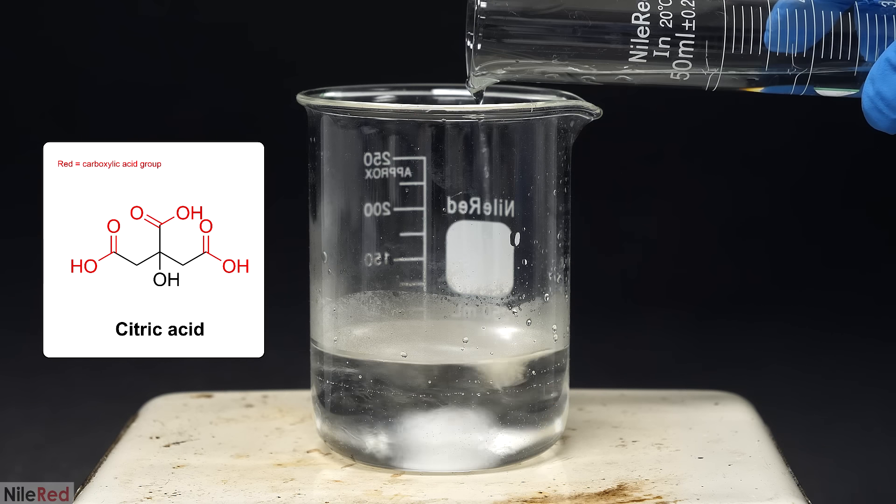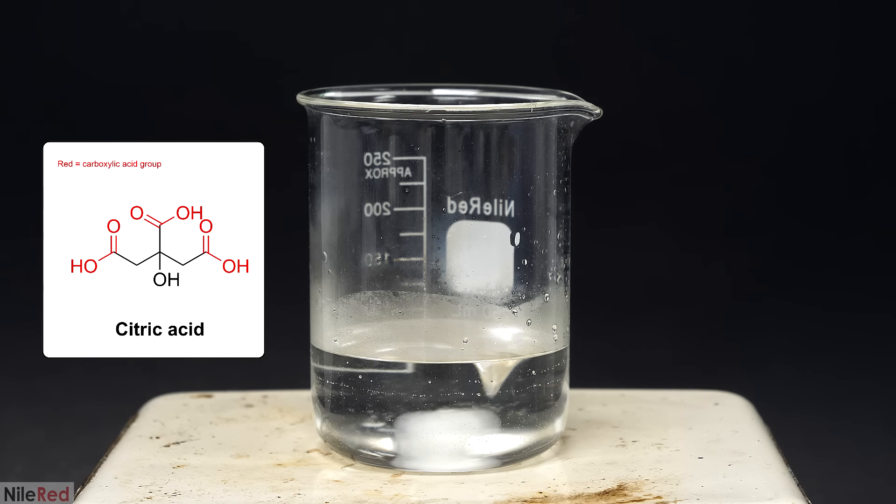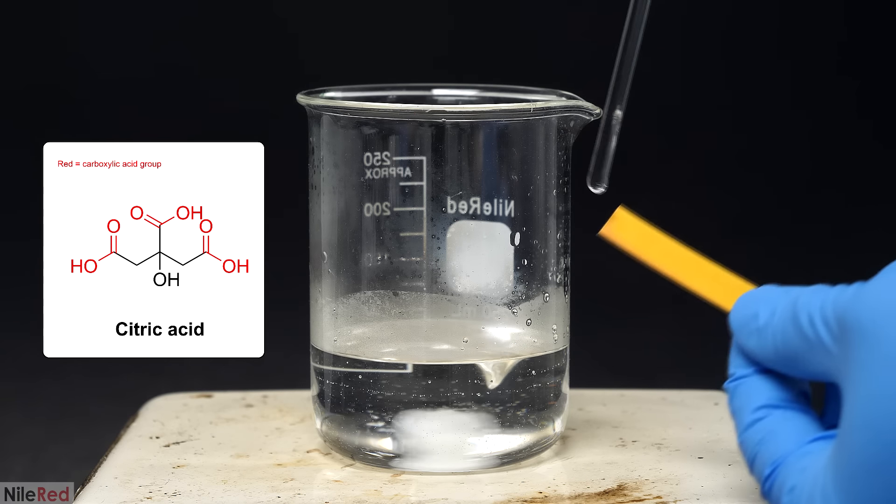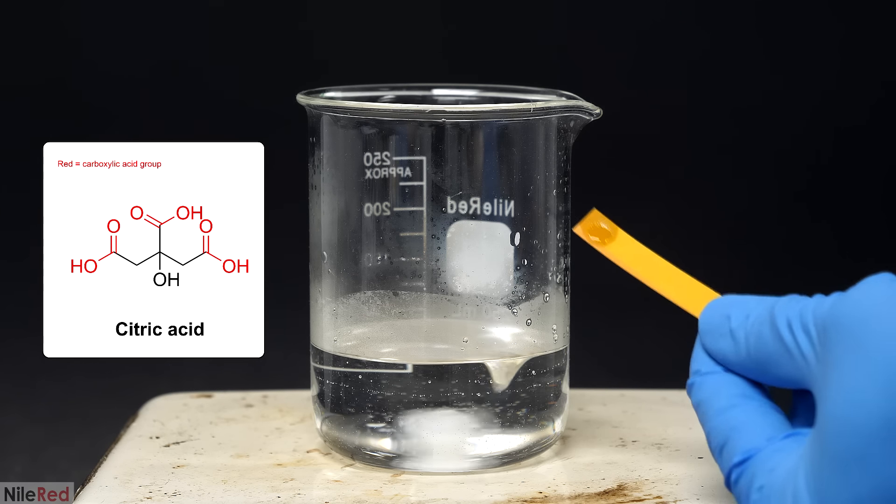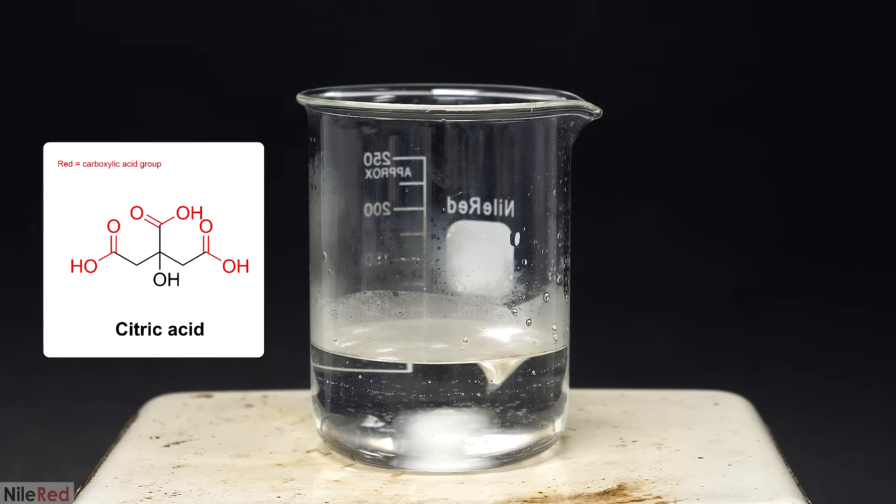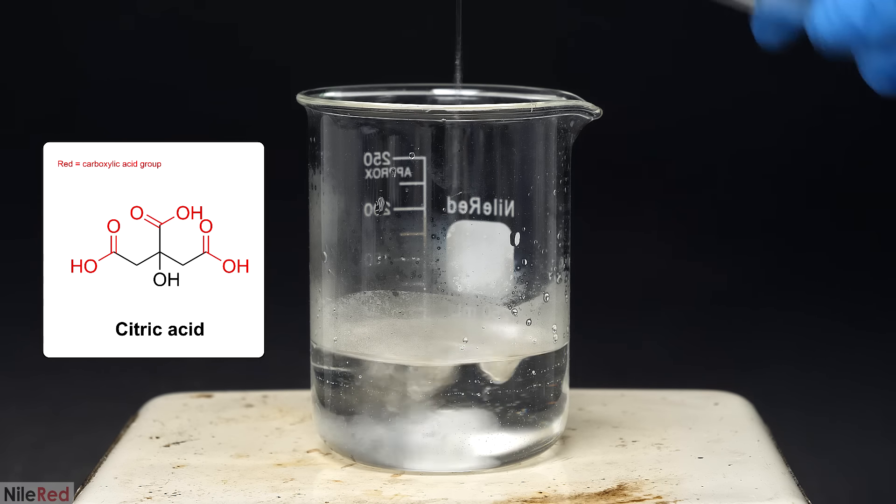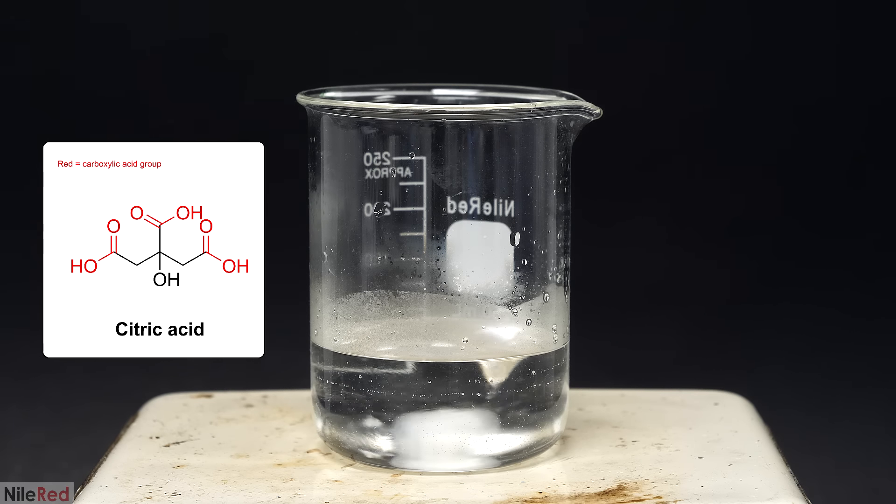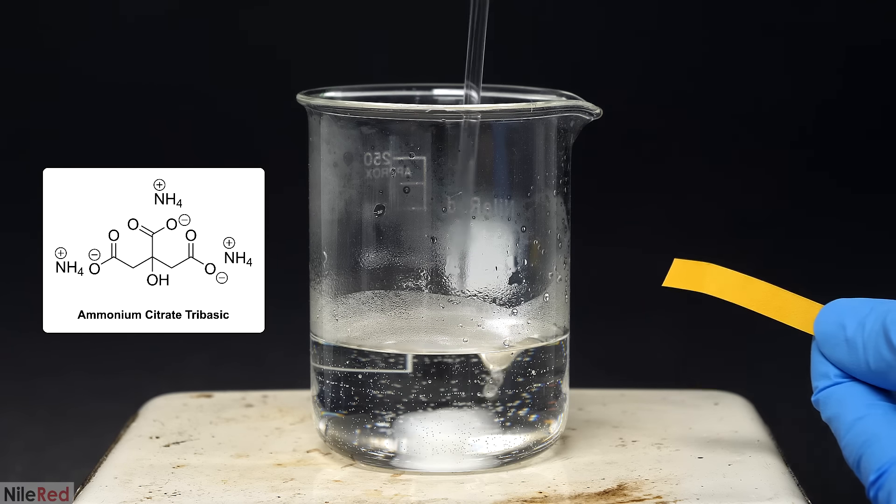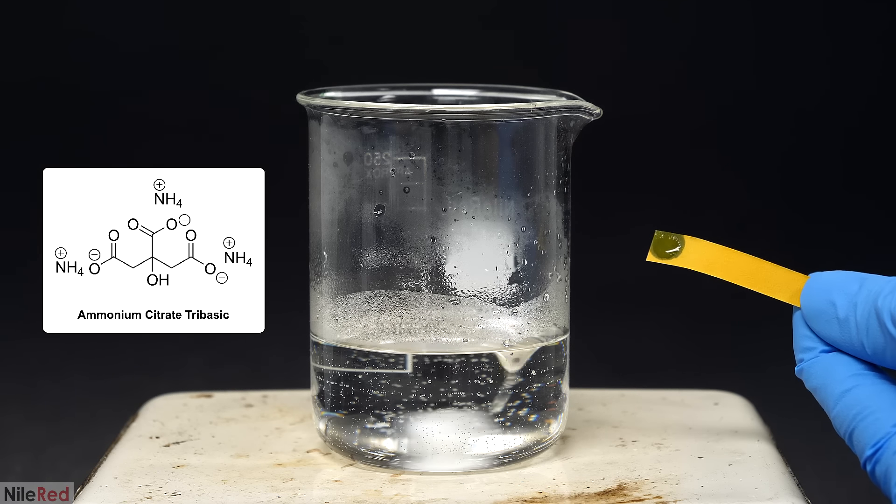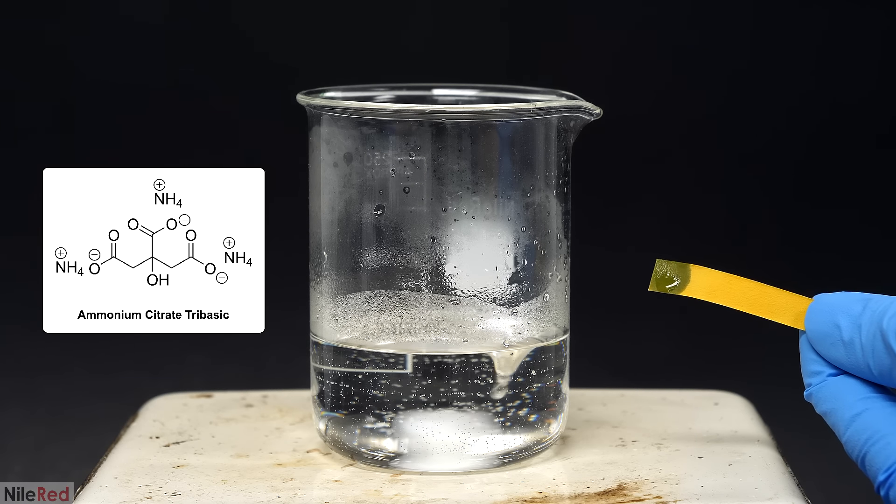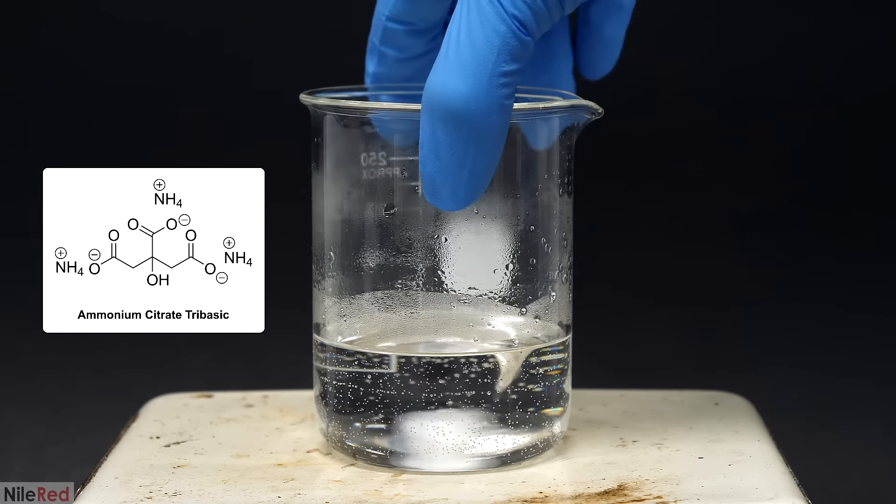Citric acid has three carboxylic acid groups and it can therefore react three times with ammonia. Each carboxylic acid group isn't equal though, and they all have different acid strengths. So as the ammonia was added it first reacted with the strongest group, then the second and finally the third. By the time the pH was neutral or just slightly basic there was no citric acid left and it was all in the form of ammonium citrate.